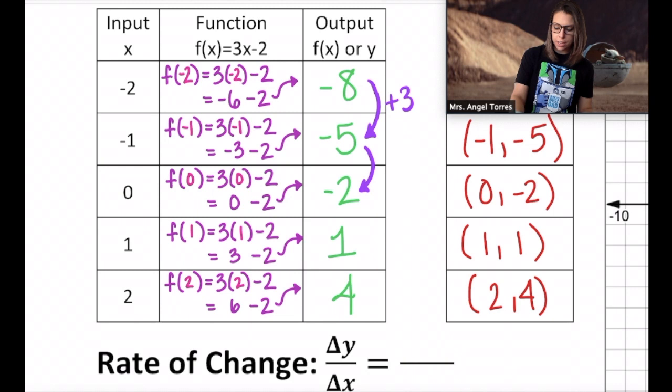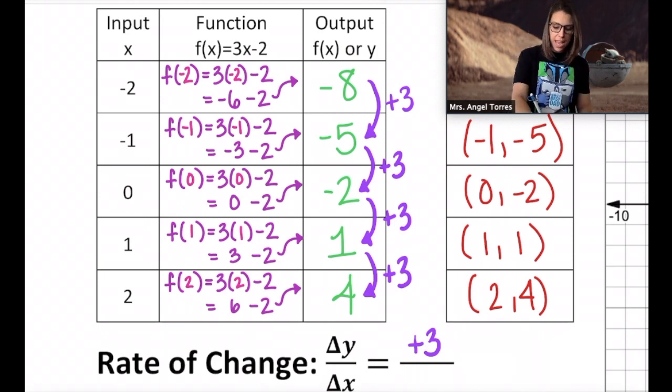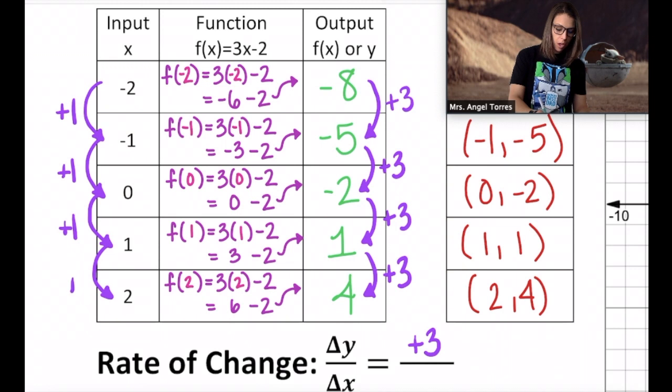Does that pattern continue? What's the change from -5 to -2? Also +3. -5 plus 3 equals -2. What about from -2 to +1? Also +3. And from 1 to 4, also +3. So this is a pattern. Y is increasing by 3 every single time. So in our ratio, we're going to represent our change in y as a positive 3. So what's the change in x? From -2 to -1, that change is +1. From -1 to 0, also +1. 0 to 1 is +1. And 1 to 2 is also +1. That's a pattern. X is increasing by positive 1 as we move throughout the table. So our rate of change here would be 3 over 1.